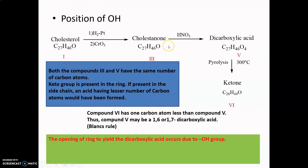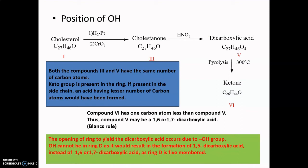So the OH group is present on a ring. Cholesterol has four rings — A, B, C, and D — and we need to establish on which ring. The OH cannot be on ring D because ring D is a five-membered ring; if it were, we would get a 1,5-dicarboxylic acid, but we are getting a 1,6- or 1,7-dicarboxylic acid. So the OH must be on ring A, B, or C.